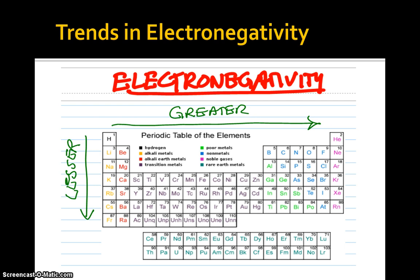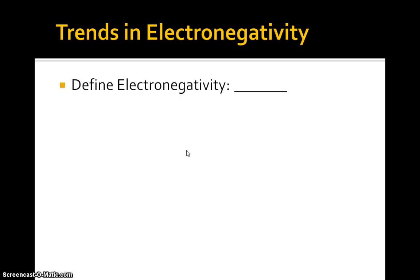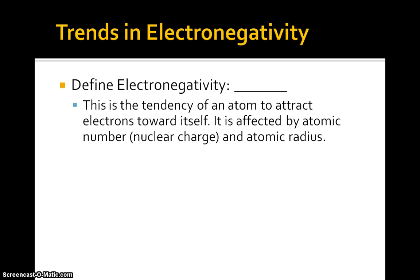Electronegativity is probably one of the most versatile concepts and comes up an awful lot in grade 12. As we measure electronegativity going across a row it gets markedly greater, whereas going down a column electronegativity gets less and less, once again due to the atomic radius increasing. Electronegativity is the tendency of an atom to attract electrons toward itself; it's affected by atomic number — that is, the nuclear charge — and by the atomic radius.